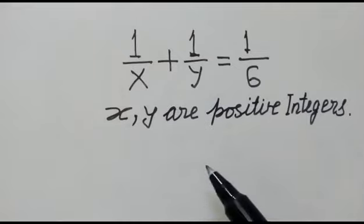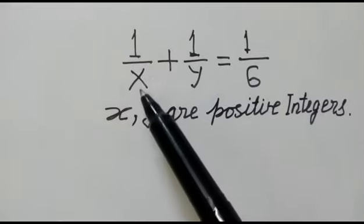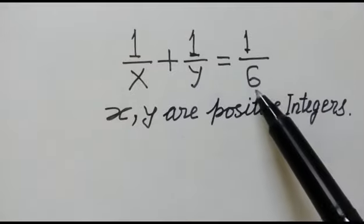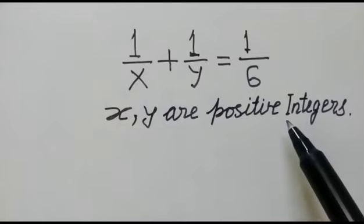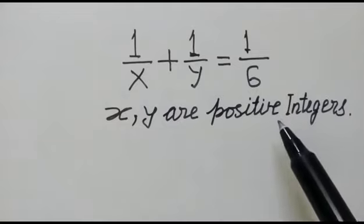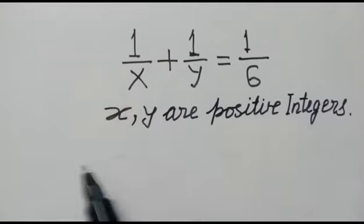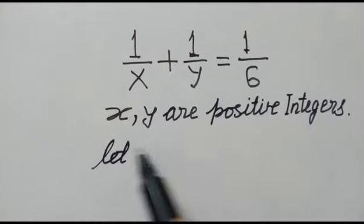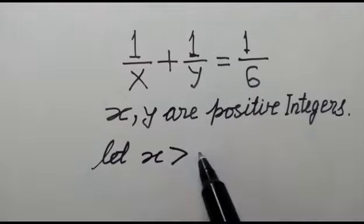Hi friends, good morning. Our equation is 1 over x plus 1 over y is equal to 1 over 6, where x and y are positive integers. We have to solve this equation.